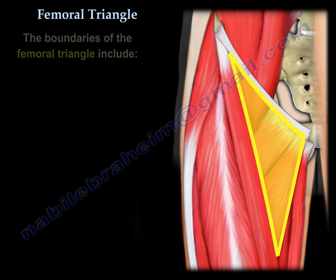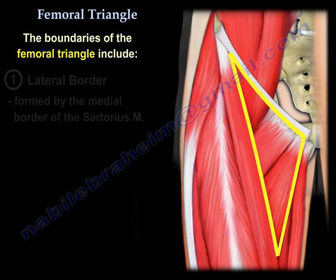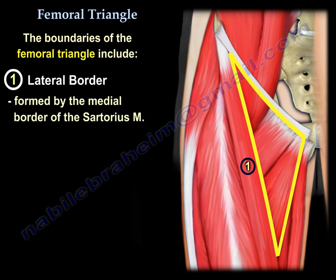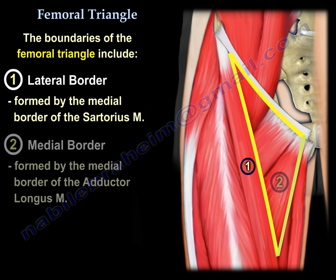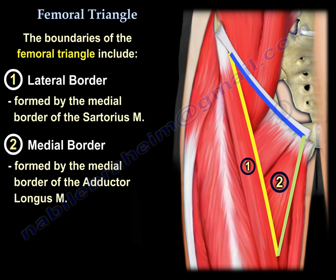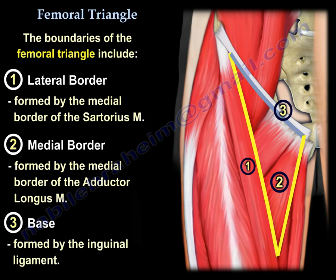The femoral triangle has three borders. The lateral border is formed by the medial border of the sartorius muscle. The medial border is formed by the medial border of the adductor longus muscle. The base of the triangle is formed by the inguinal ligament.